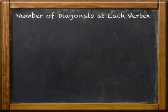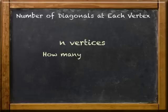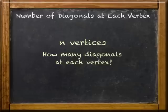So following that pattern, what if you had n sides, which means n vertices, how many diagonals at each vertex? Well, because of the three that you can't go to, that would be a total of n minus three.